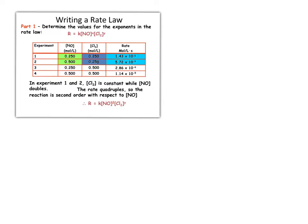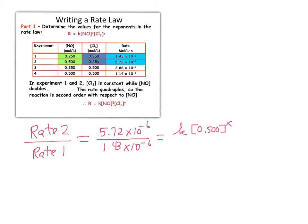To solve this problem, we're going to set up a ratio, the ratio between experiment one and experiment two. I'm going to put the larger value of the concentration in the numerator just for simplicity. So I'm comparing the rate of two to the rate of experiment one. I know what those numerical values are because they're given in the table, 5.72 times 10 to the negative 6th over 1.43 times 10 to the minus 6th.